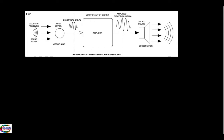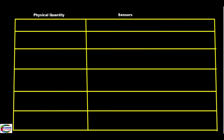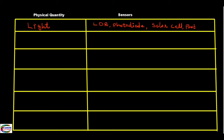Now we will see some commonly used sensors, starting with the physical quantity of light. For light, we have LDR — Light Dependent Resistor — and photodiode, which both detect light. We also have solar cell, which receives light, and phototransistor.